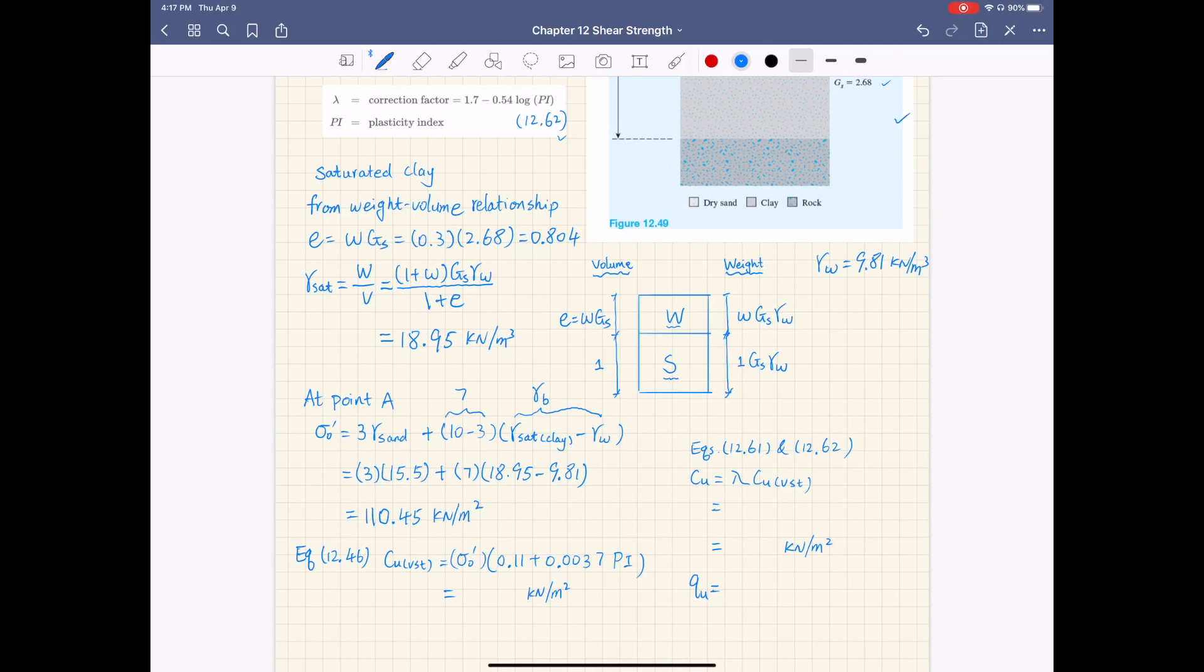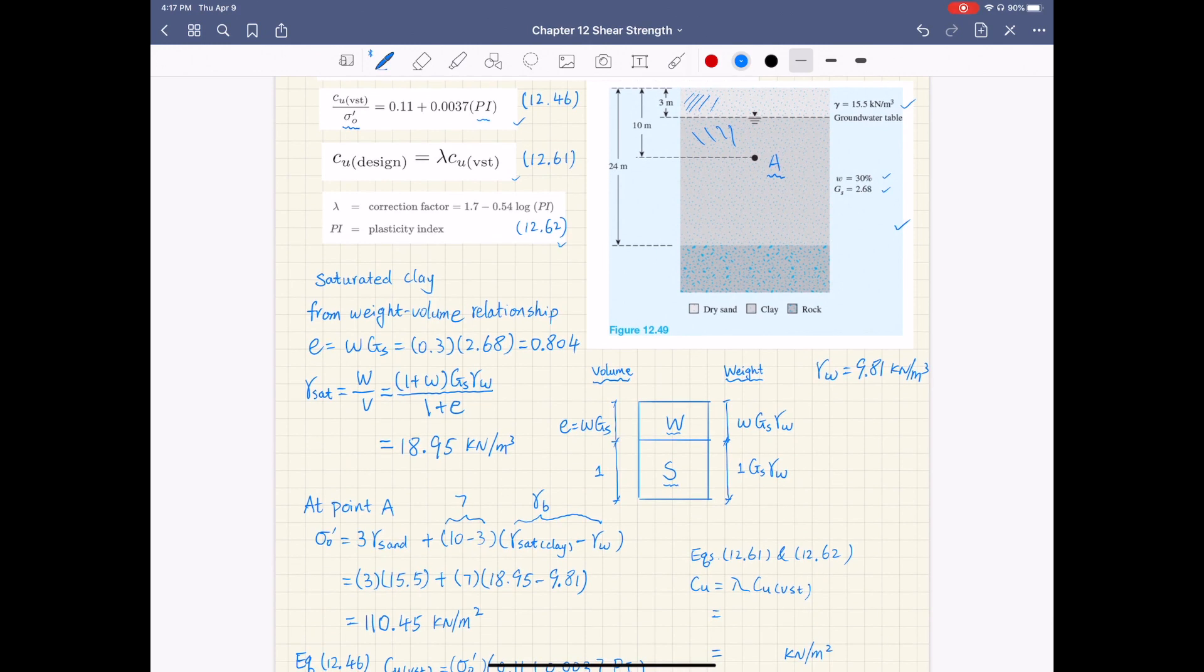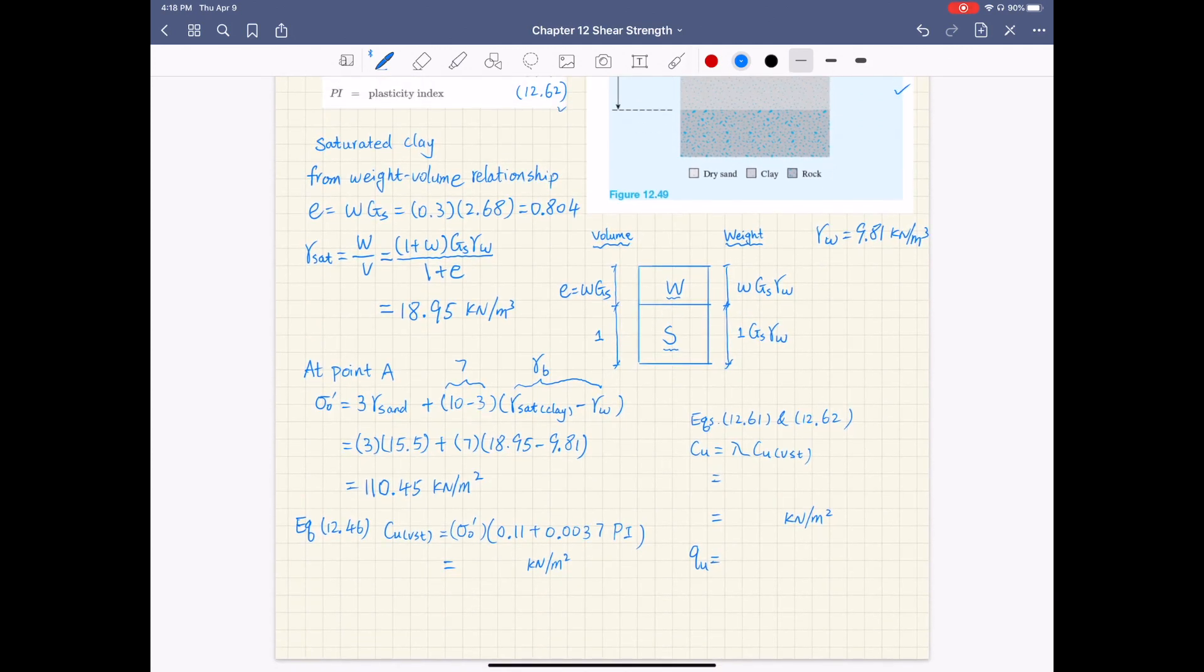So now we have this effective overburden pressure, we can plug in equation 12.46. PI we already calculated is 35, so just plug in the equation. This is 35, and this is 110.45. If you plug in these numbers, CU VST from equation 12.46 is 26.45.